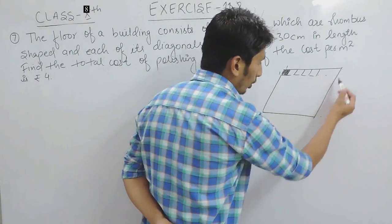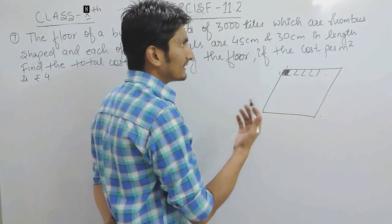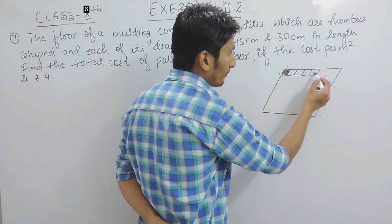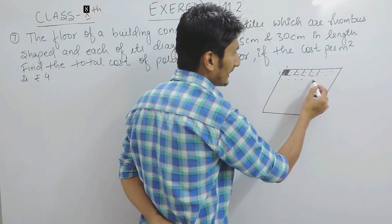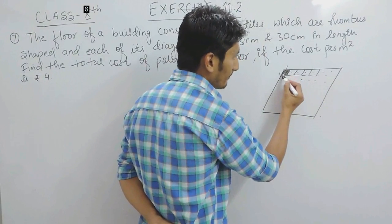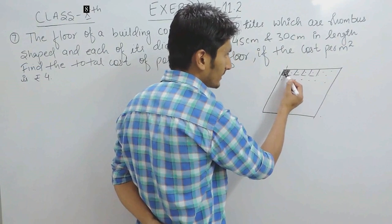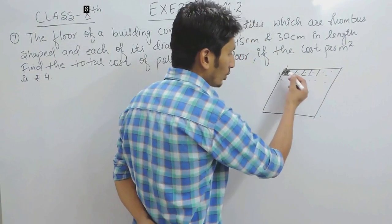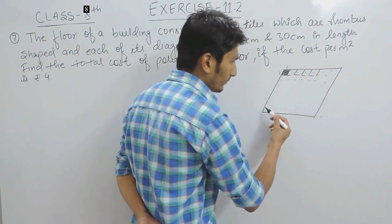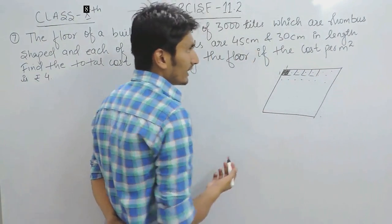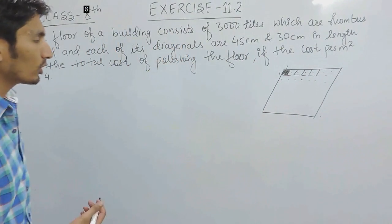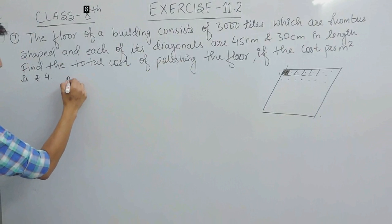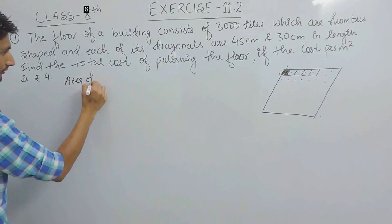This whole area is nothing but the area of rhombus, and because every rhombus is of same area, if I am able to find the area of 1 rhombus and multiply it with the number of rhombus, I will get total cost. So let's find what should be the area of our rhombus.